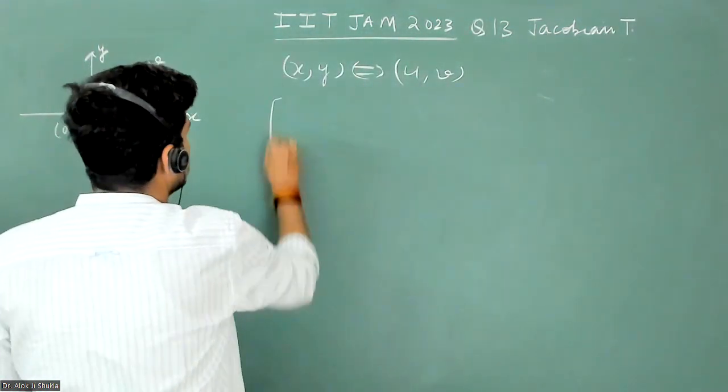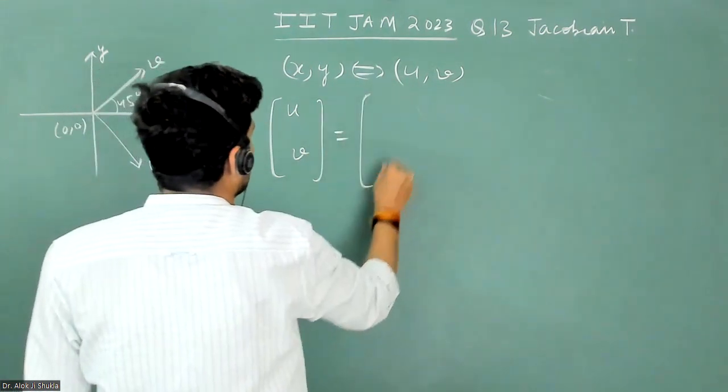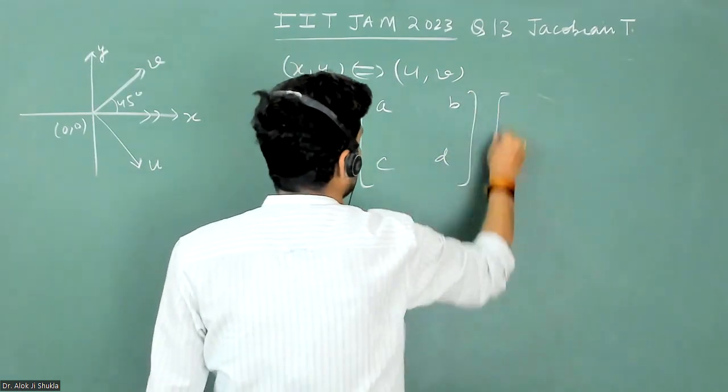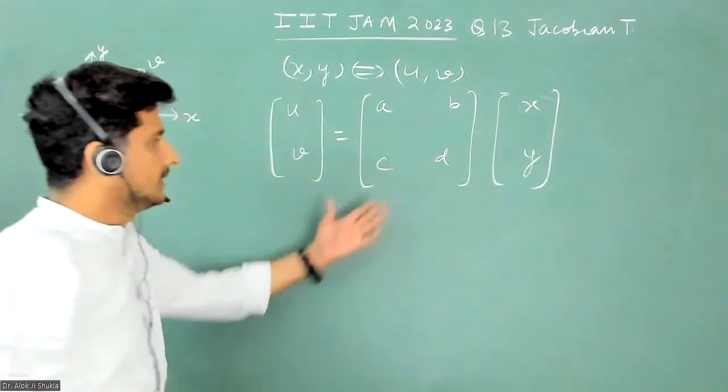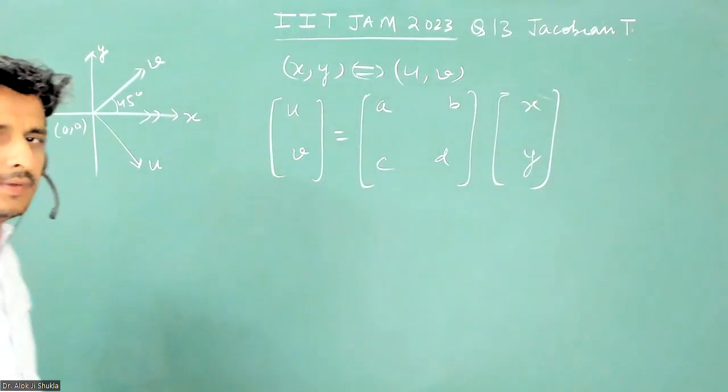Obviously in this case, what you get as a result is U comma V. There will be a transformation matrix involved with elements A, B, C, D, and that will be operated on X comma Y. This matrix will be operated on X comma Y and will result in transformation to U comma V.